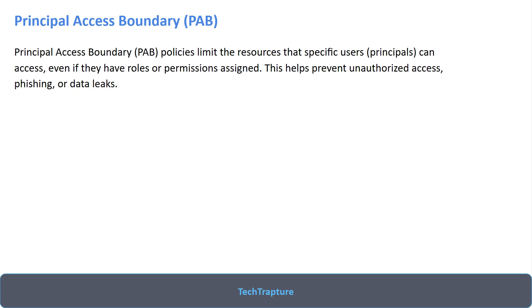To avoid that, we can use a Principal Access Boundary. It will restrict my access only to my organization — it doesn't matter if I have access to another organization, it will still restrict that access. Let me go to the Cloud Console now to explain it better.